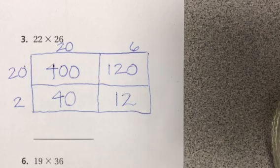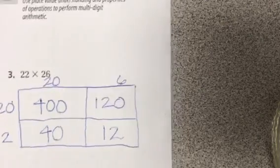Inside of my area model I have partial products. I need to add my partial products. If you look at the example in number one they added theirs horizontally and that's not my favorite method.